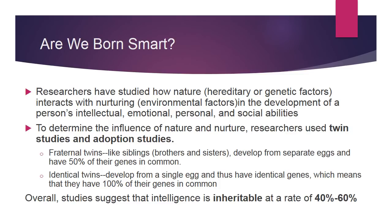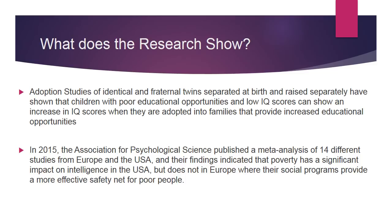Fraternal twins, like siblings, develop from separate eggs and have about 50% of their genes in common. Identical twins develop from a single egg and thus have 100% of their genes in common. When researchers look at IQ studies, they see that intelligence is inherited at a rate of about 40% to 60% — so it's not exclusively genetic, nor exclusively environmental. Adoption studies of identical and fraternal twins separated at birth have shown that children with poor educational opportunities can show an increase in IQ when adopted into families providing increased educational opportunities.